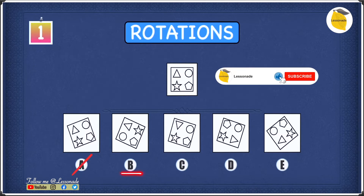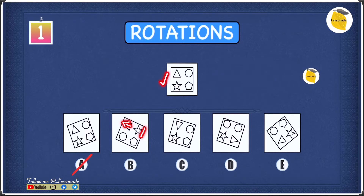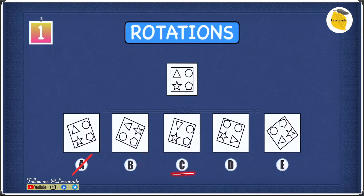Moving to B: the triangle is pointing away from the star, and the pentagon is pointing towards the circle, just like in the question figure. So B is fine. In C, the triangle is pointing towards the star, but in the question figure the triangle is pointing away from the star. So we can cross off C.